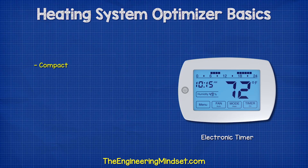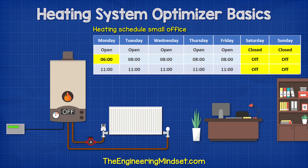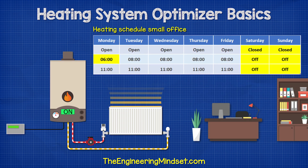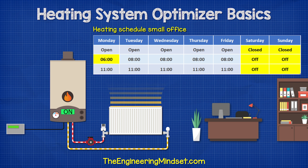Electronic controllers are compact and much easier to use. They have far more functions, but usually at least a 7-day time schedule with multiple on-off times per day. This is useful, for example, in a small office which is closed on weekends.